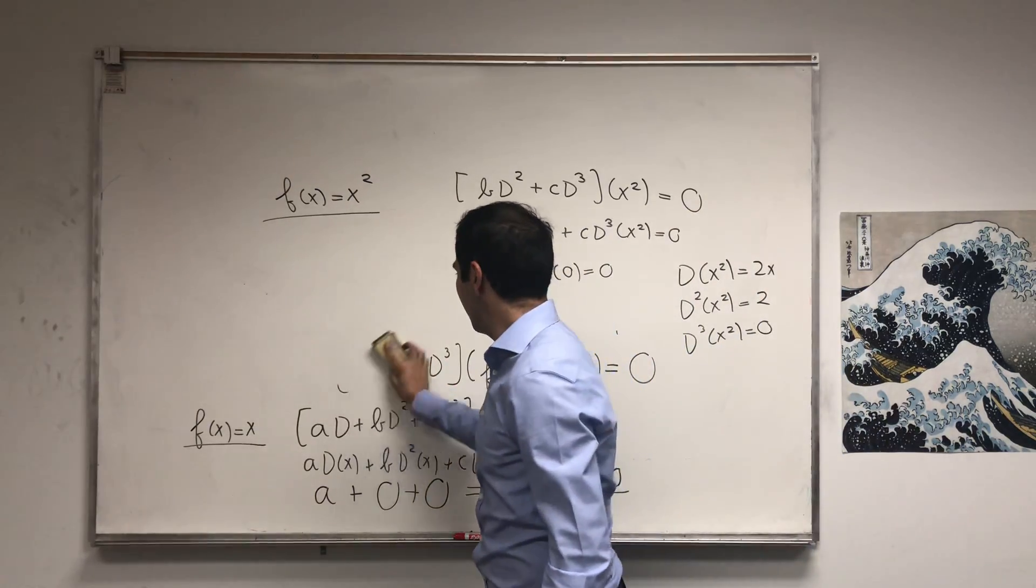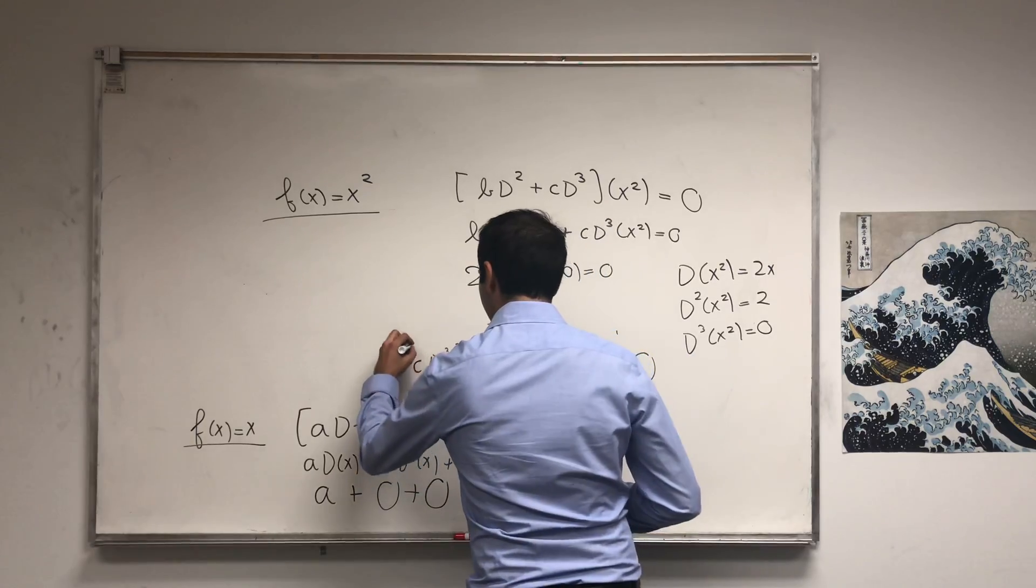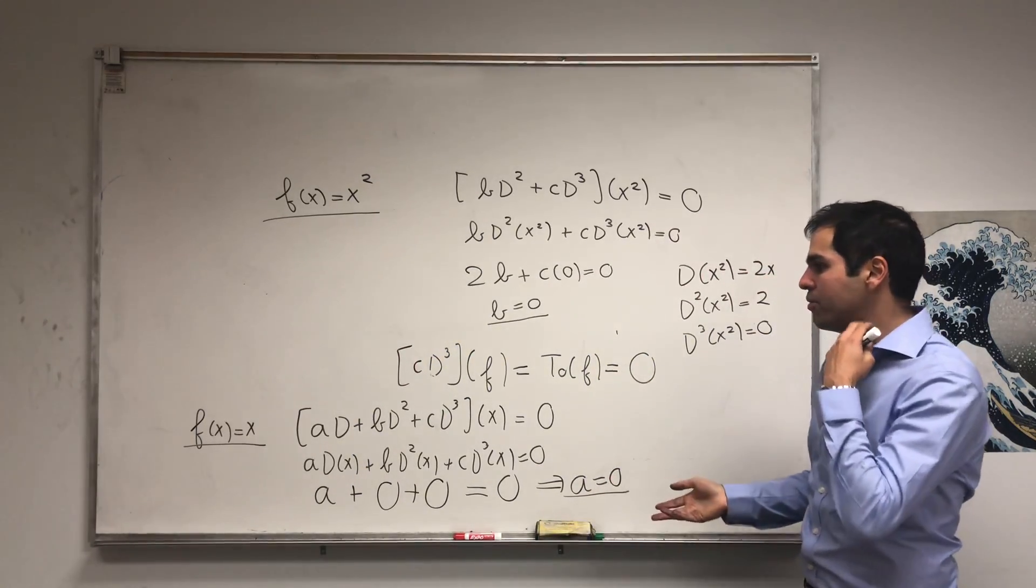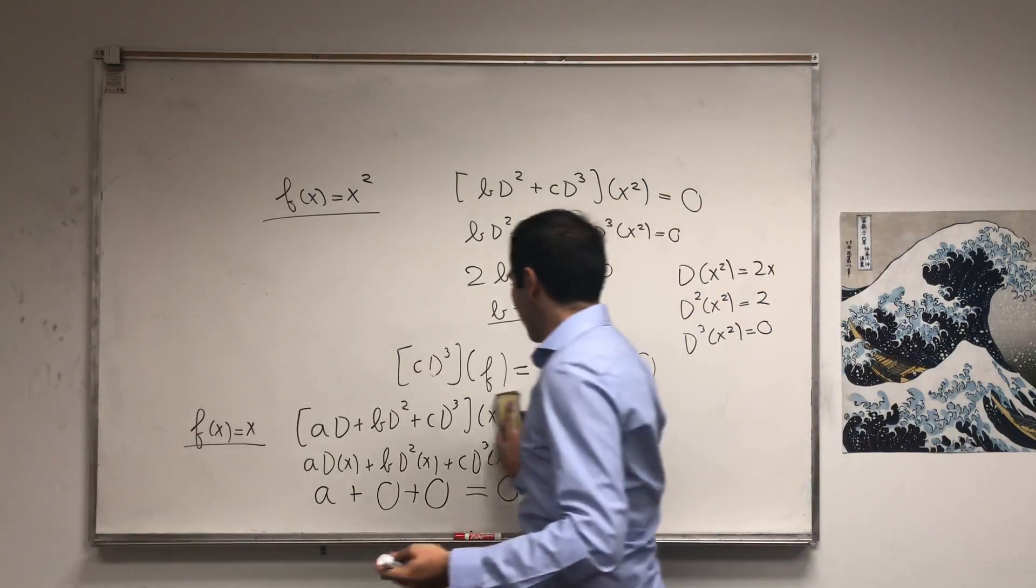Which is great. We showed a is zero, we showed b is zero. Now let's just hope that c is zero. But the point is you're left with cD³ of f equals zero. Well, let's just continue. Let's set f(x) be x³. So f(x) equals x³.